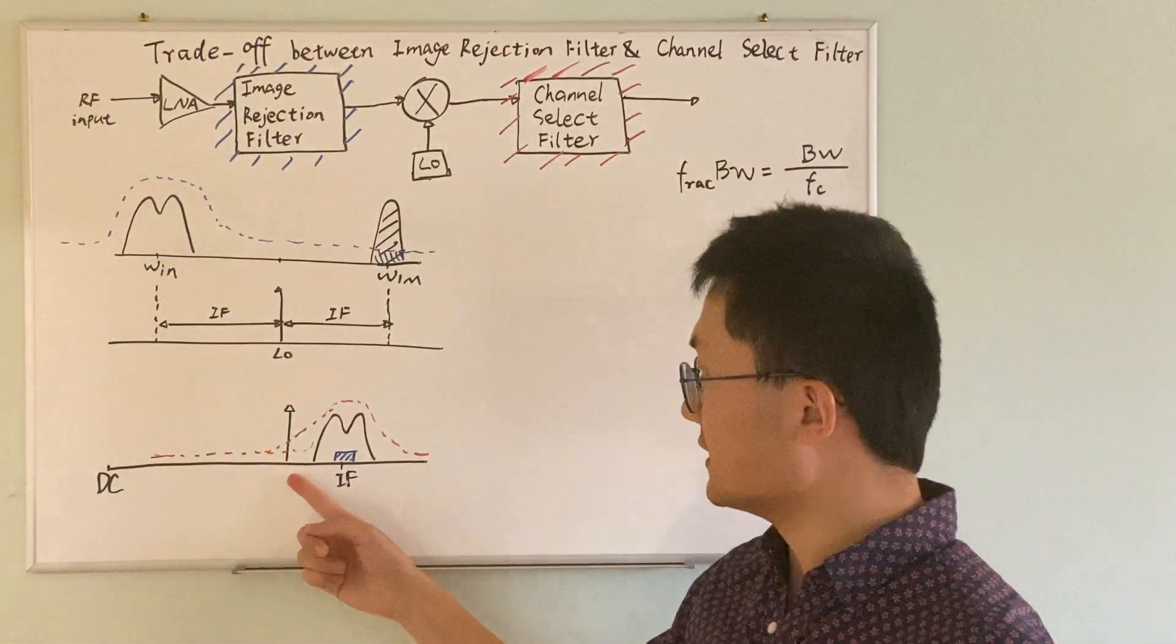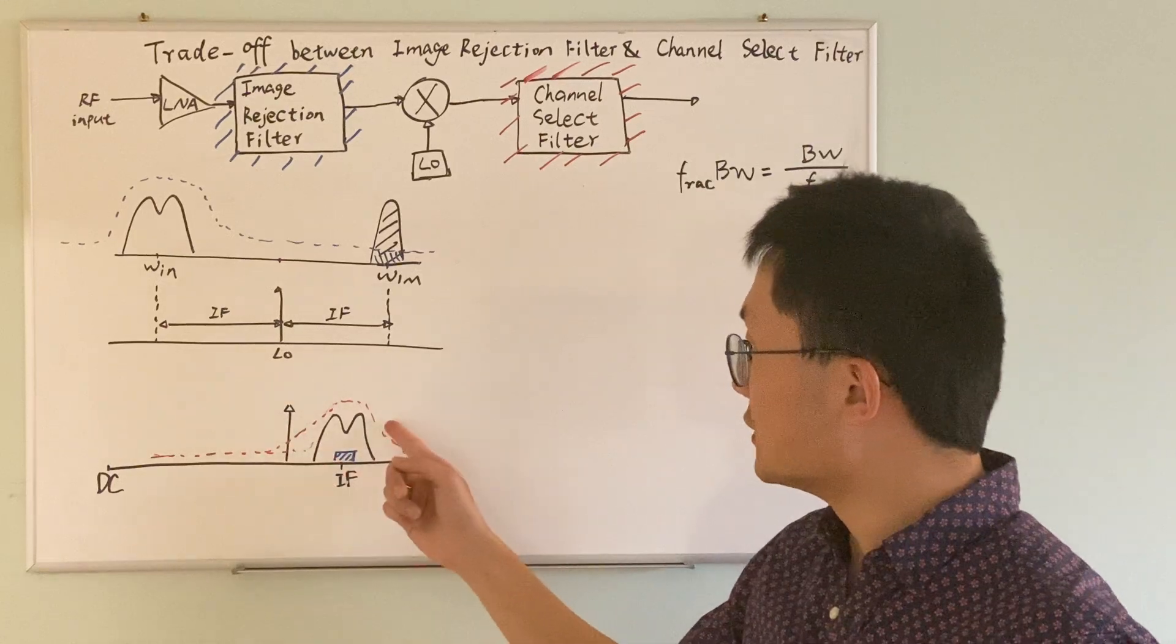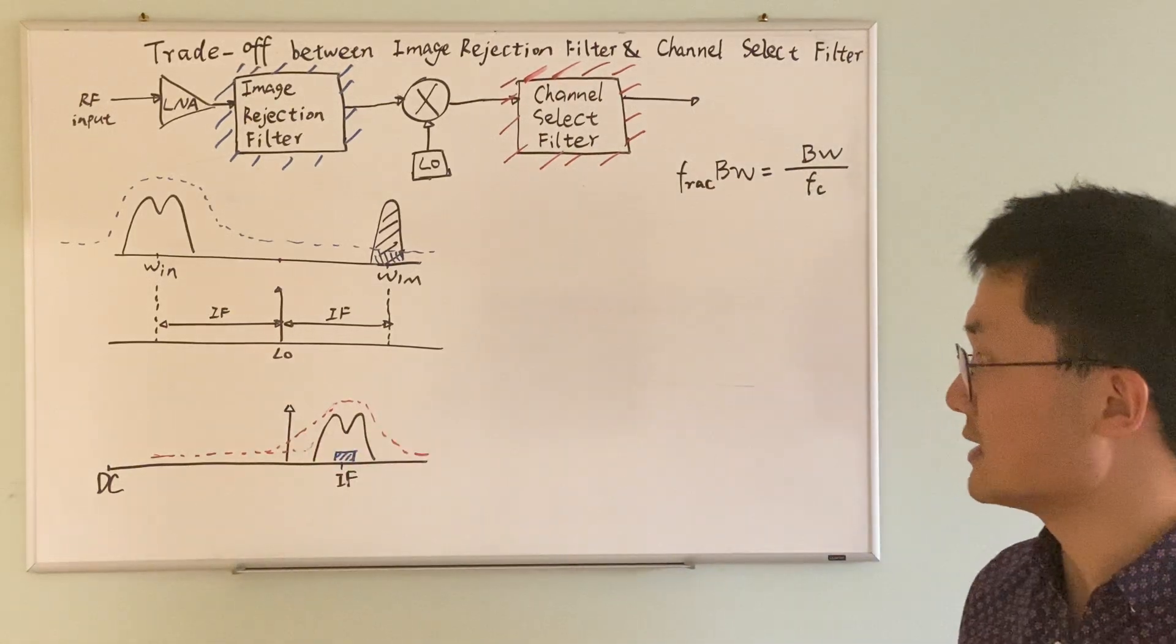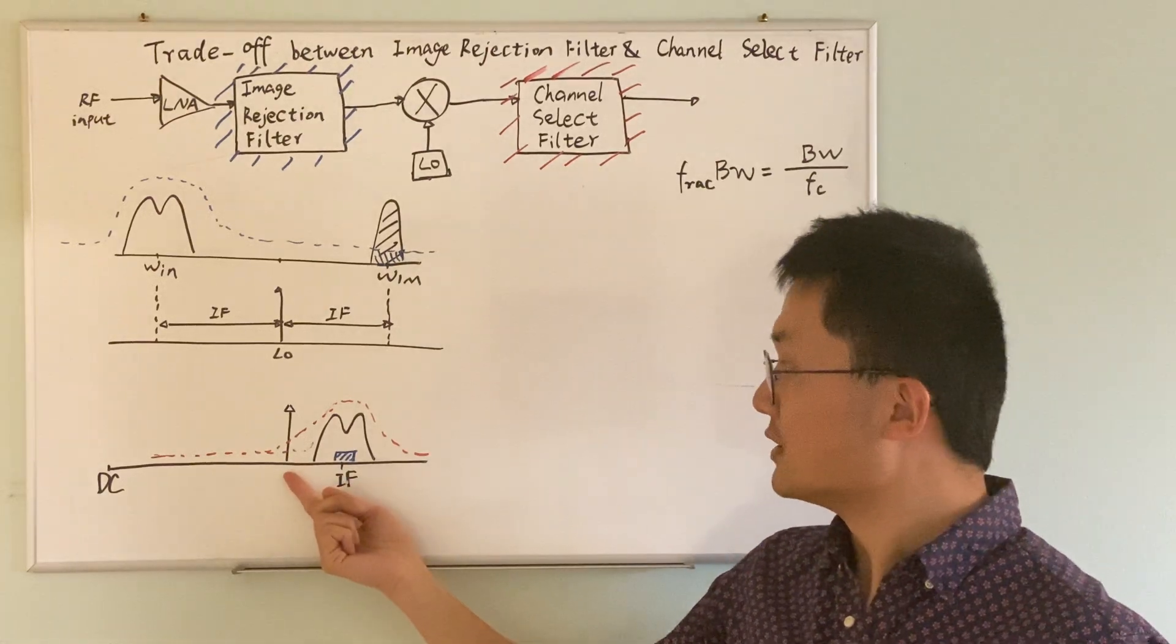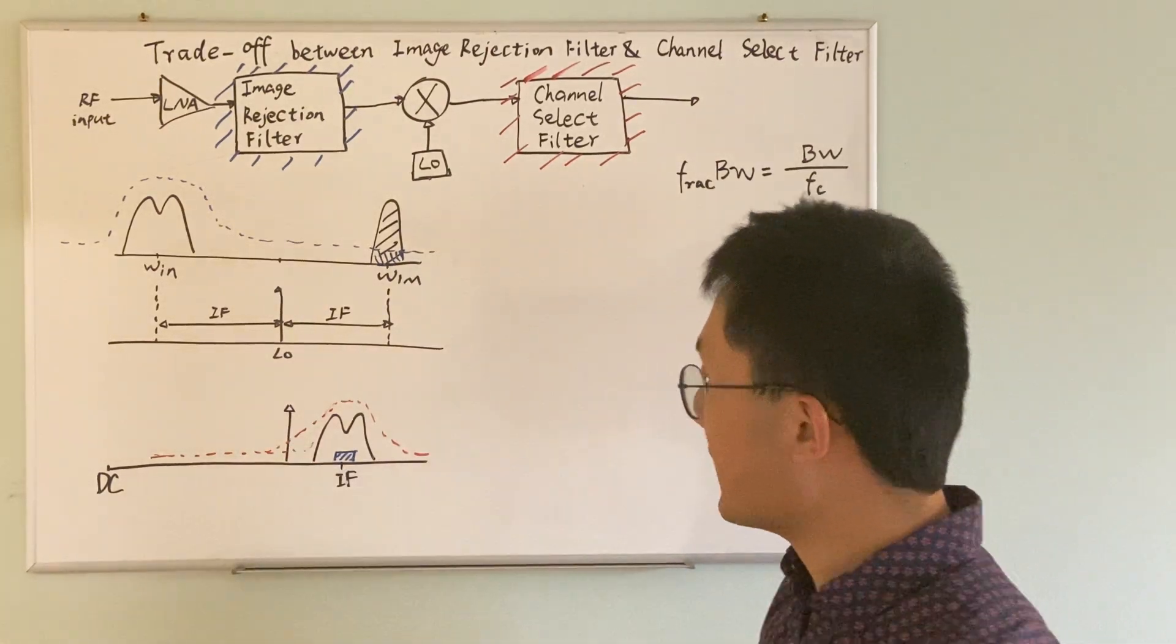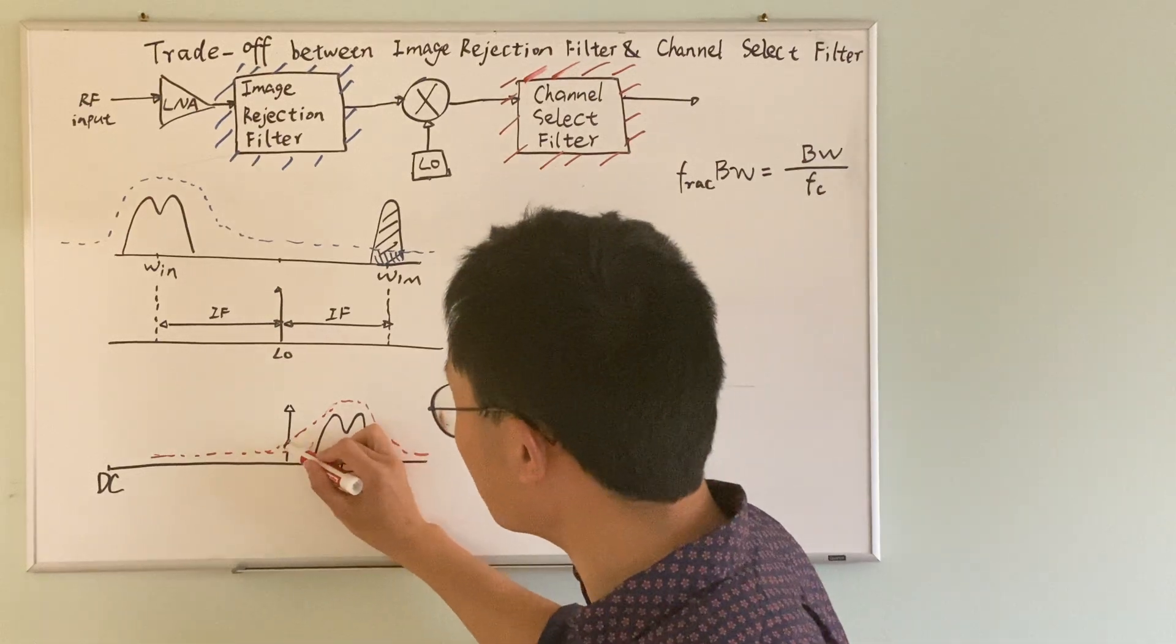So as you can see here, the channel select filter applies some suppression to the spur. However, the suppression is not complete. There is still a little bit remaining signal energy here.